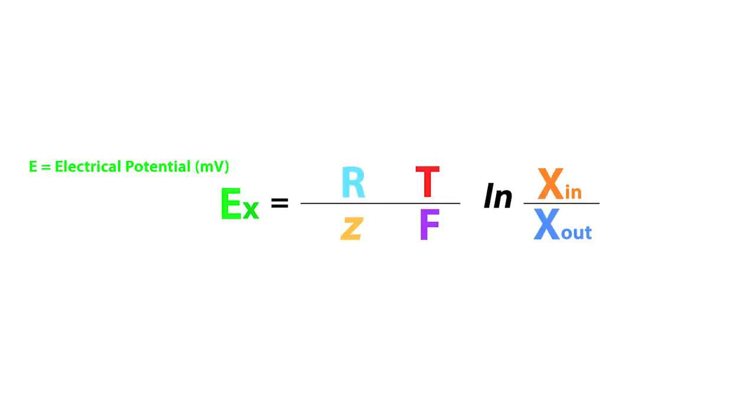Now, the Nernst equation is typically denoted as such, where E represents the electrical potential given in millivolts and X represents the identity of the charged molecule.